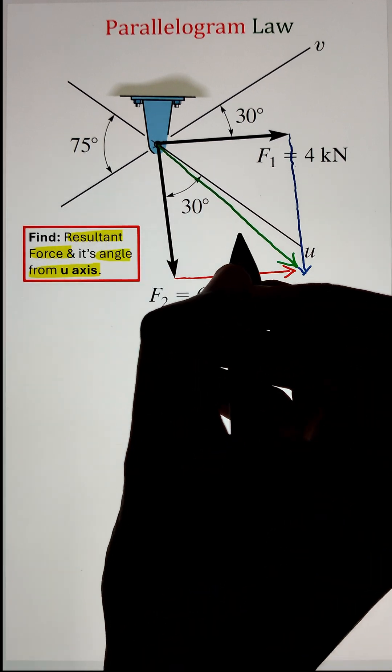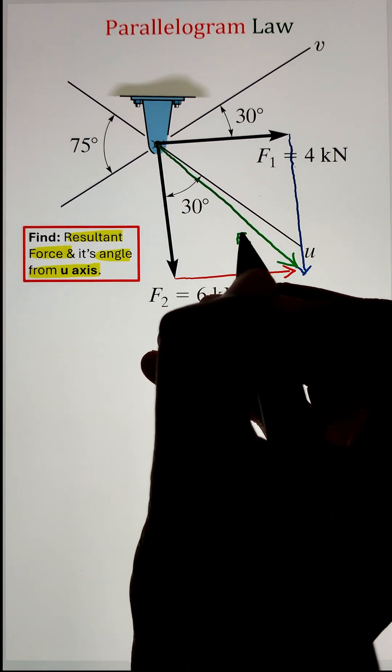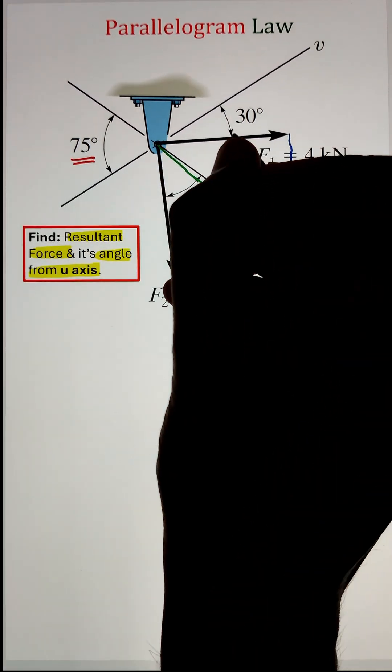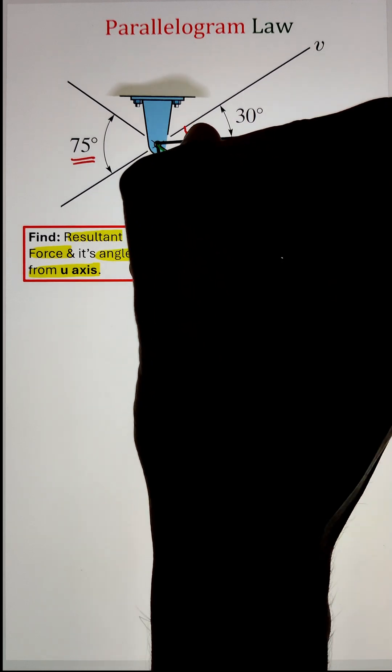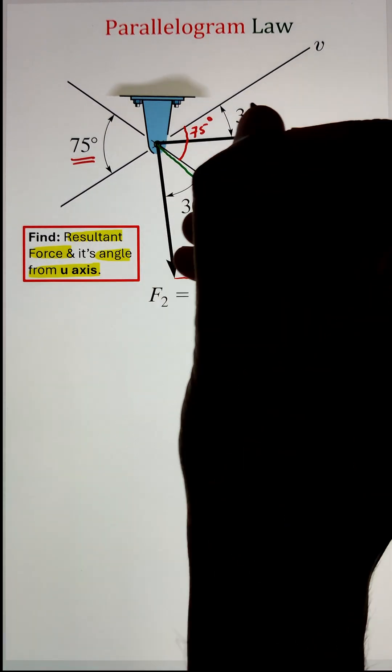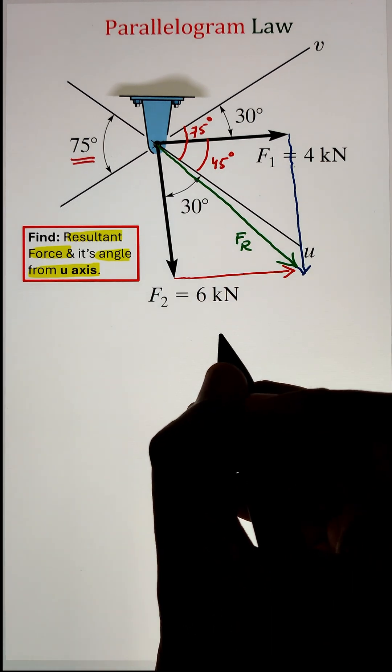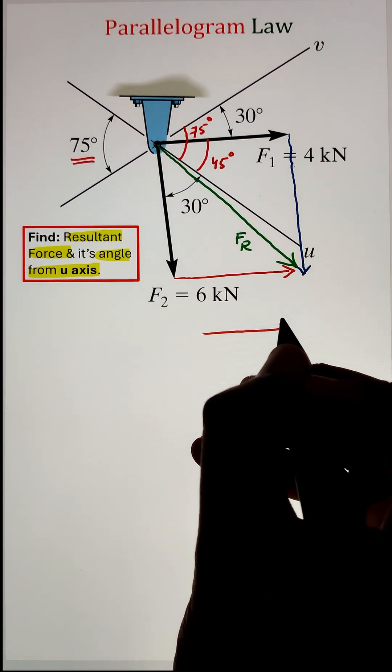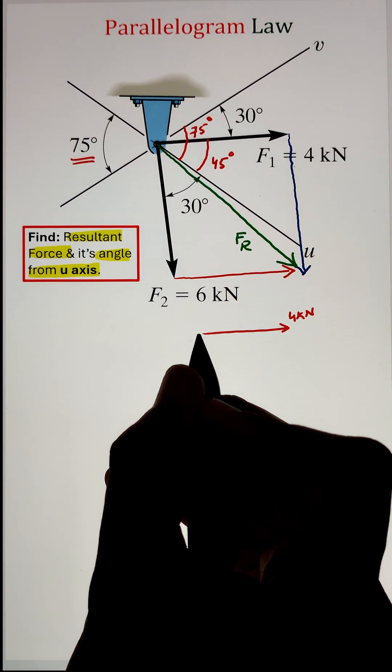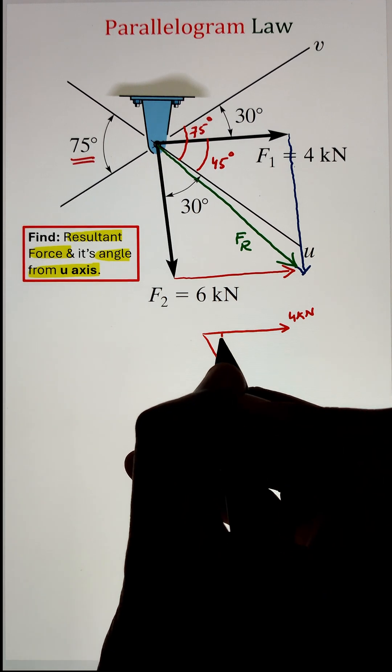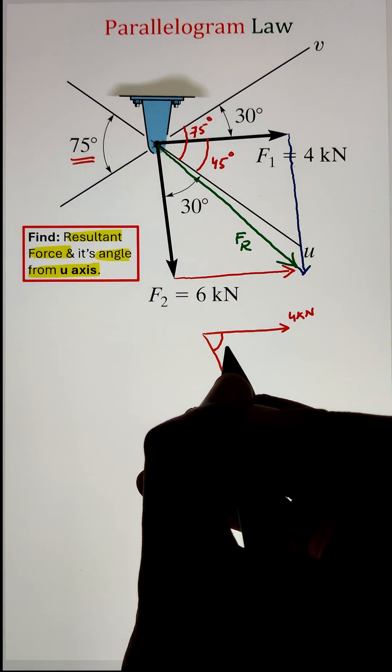Once we have that, we have to identify the internal angles of the parallelogram here as well. Since the angle between axis v and u is 75, this gives us the angle from force F1 to the axis u as 45 degrees. Combining it with the 30 degrees gives us one of the internal angles of the parallelogram as 75.